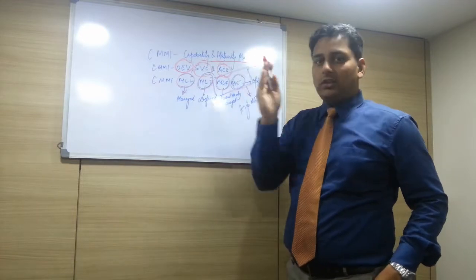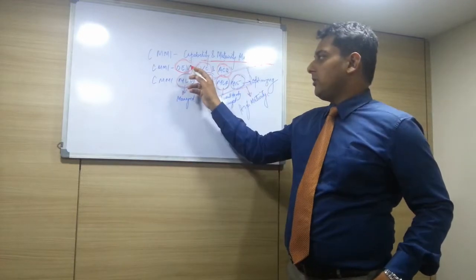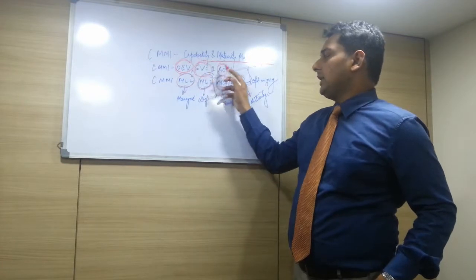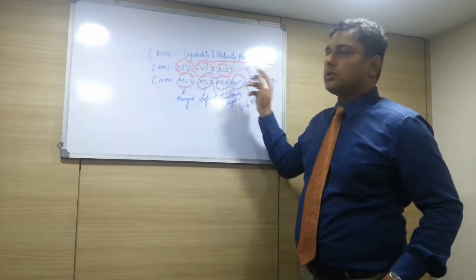CMMI has 3 constellations: one is CMMI for Development, another is CMMI for Services, and the third one is CMMI for Acquisition.